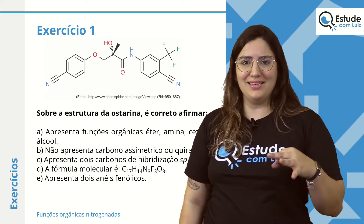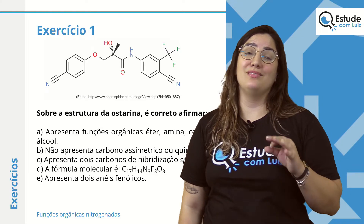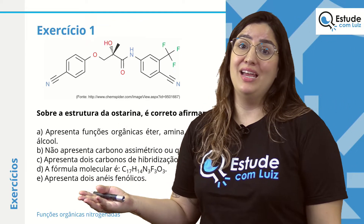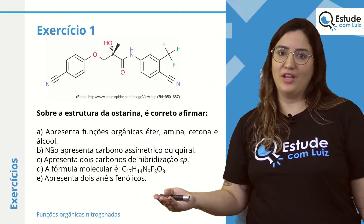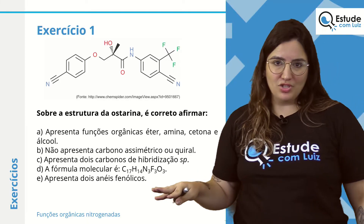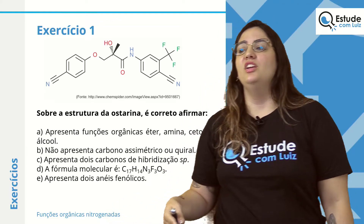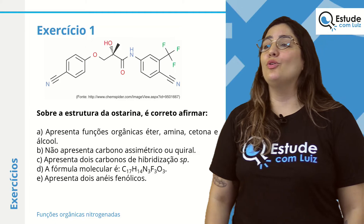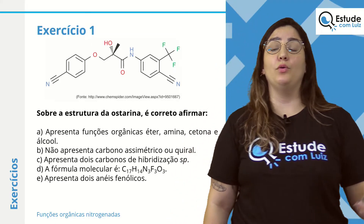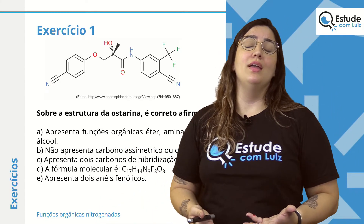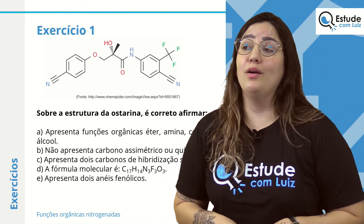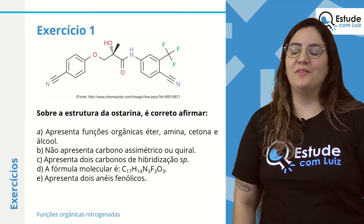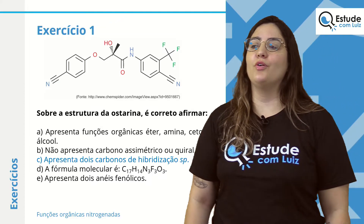Letra D pede fórmula molecular — pulamos, pois já encontramos a alternativa correta. Letra E: apresenta dois anéis fenólicos. Anel fenólico é benzeno com hidroxila. O único OH da estrutura é de álcool, não de fenol. E temos apenas dois anéis benzênicos, não três como tentam induzir — o terceiro anel apresentado tem heteroátomo, não é benzênico. Confirmamos: a alternativa correta é a letra C — dois carbonos com hibridização SP.